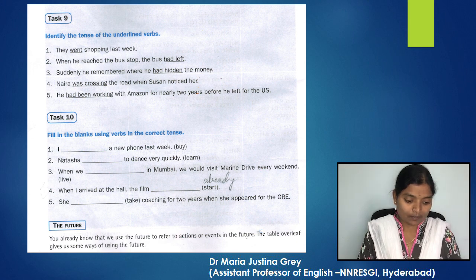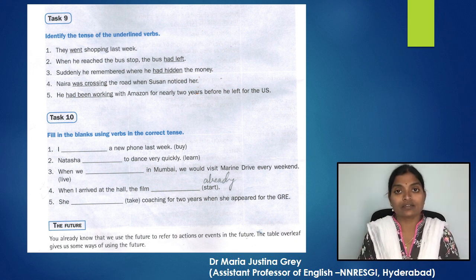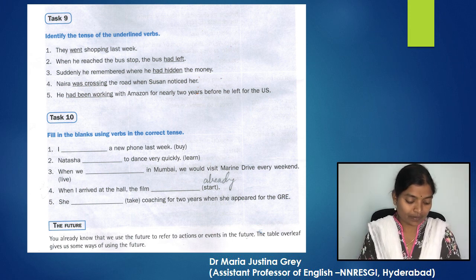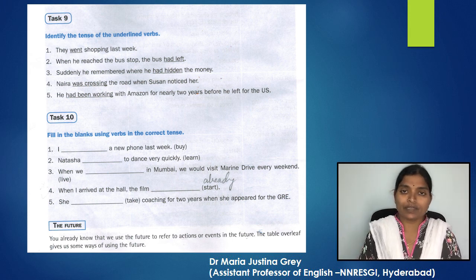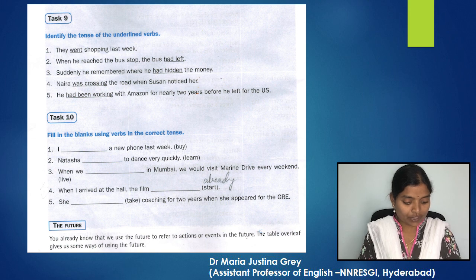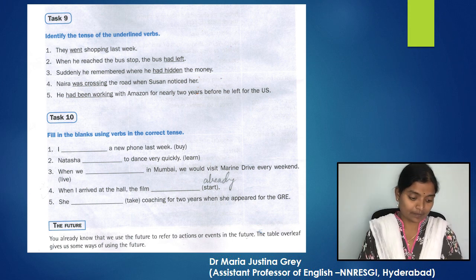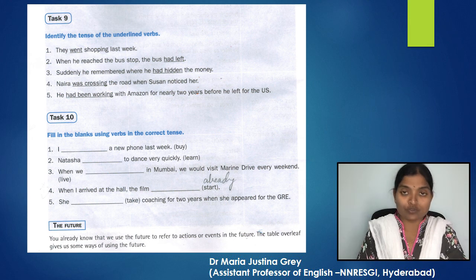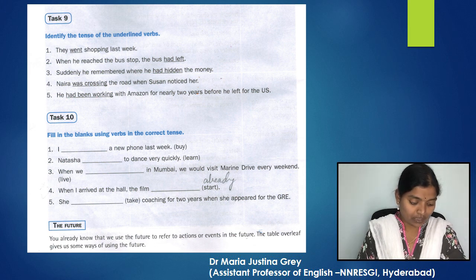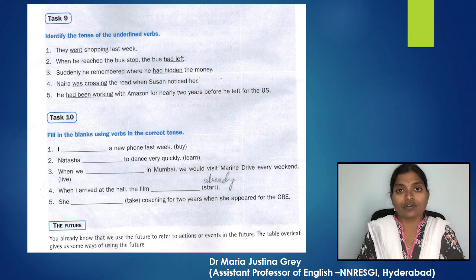Number 1: 'They went shopping last week.' — Simple past. Number 2: 'When he reached the bus stop, the bus had left.' — Past perfect. Number 3: 'Suddenly he remembered where he had hidden the money.' — Past perfect. Number 4: 'Naira was crossing the road when Susan noticed her.' — Past continuous. Number 5: 'He had been working with Amazon for nearly two years before he left for the US.' — Past perfect continuous.